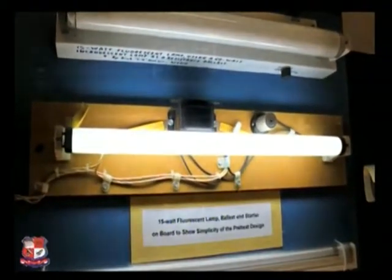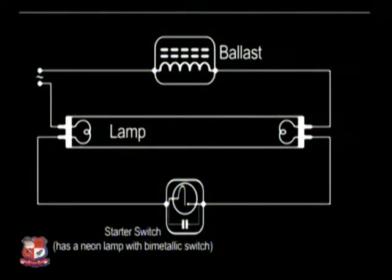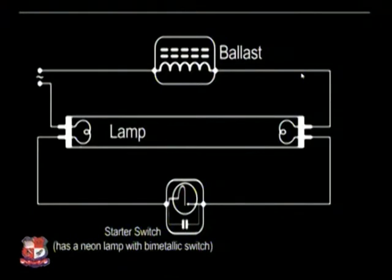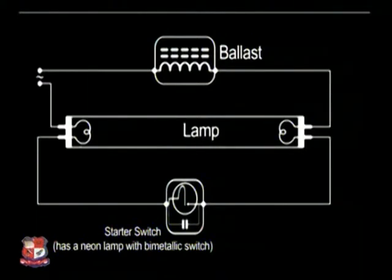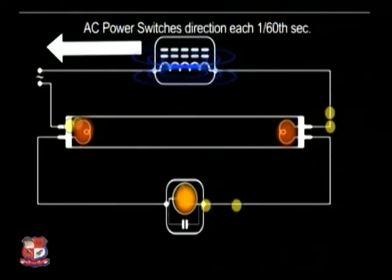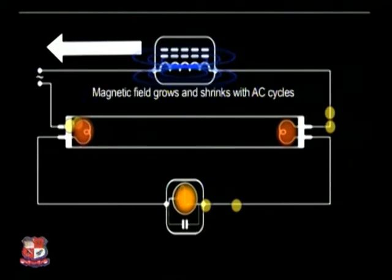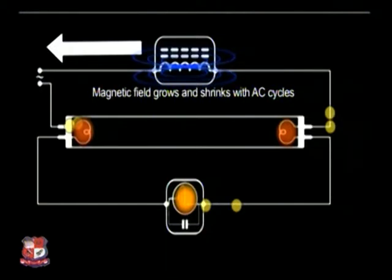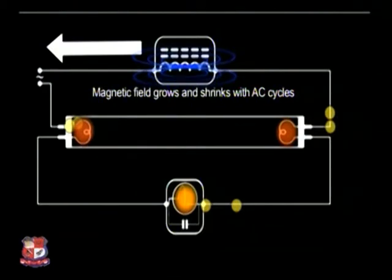In the fluorescent tube, a ballast is connected with the lamp and a starter switch is connected. The starter has a neon lamp with a bimetallic switch. The lamp has two contacts only. When supply voltage is given, the AC direction creates a magnetic field at the inductor. The magnetic field produced in the inductor shows the function of the choke coil in the fluorescent tube. The phase is connected with a choke coil, and then the choke coil is connected with an electrode and a starter.